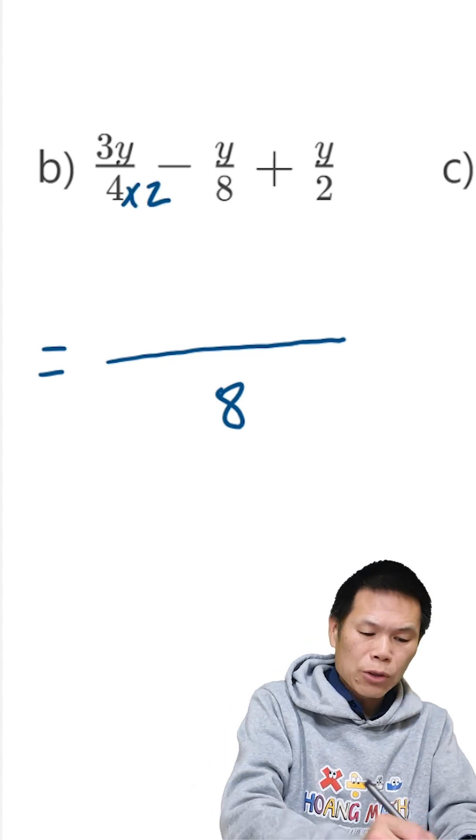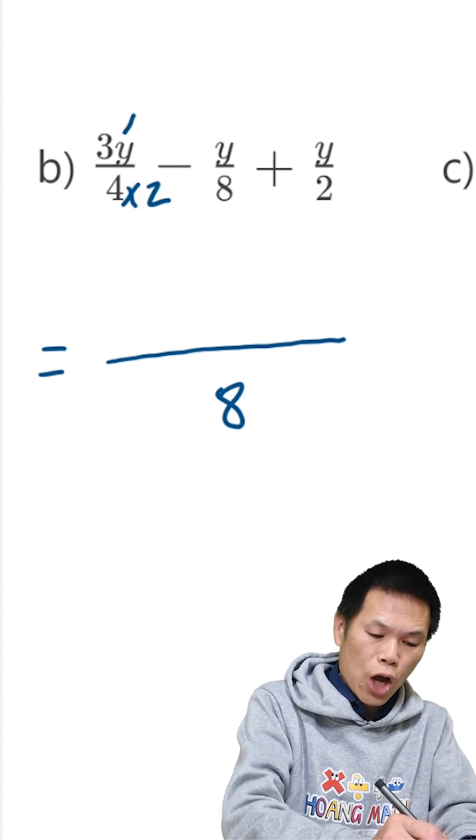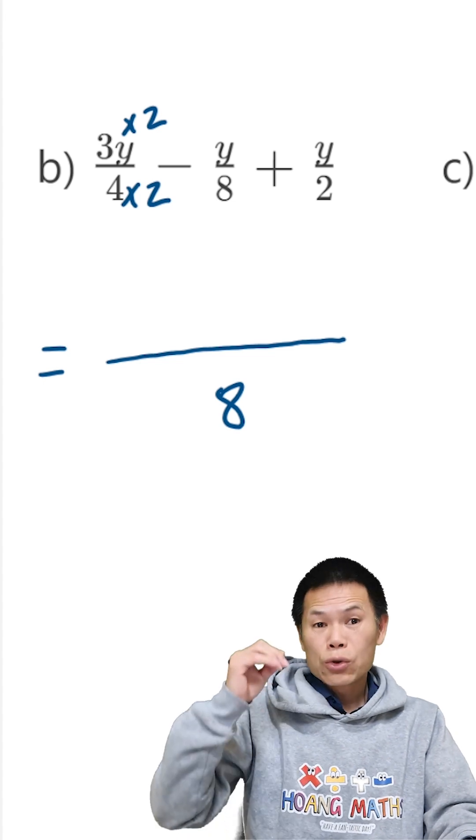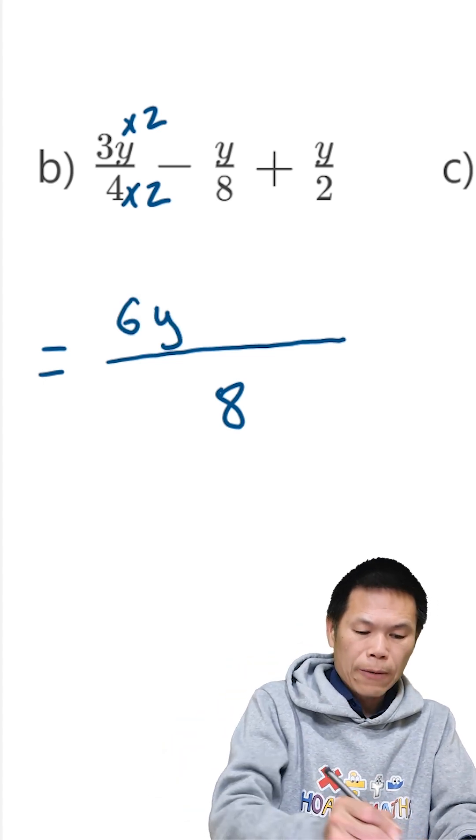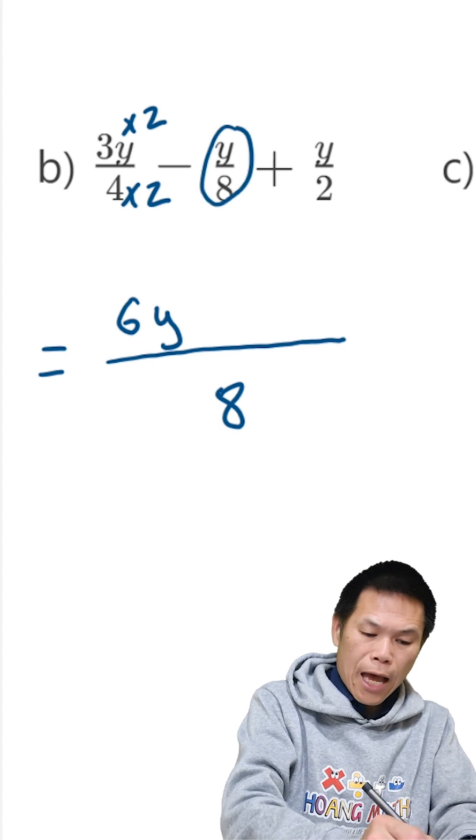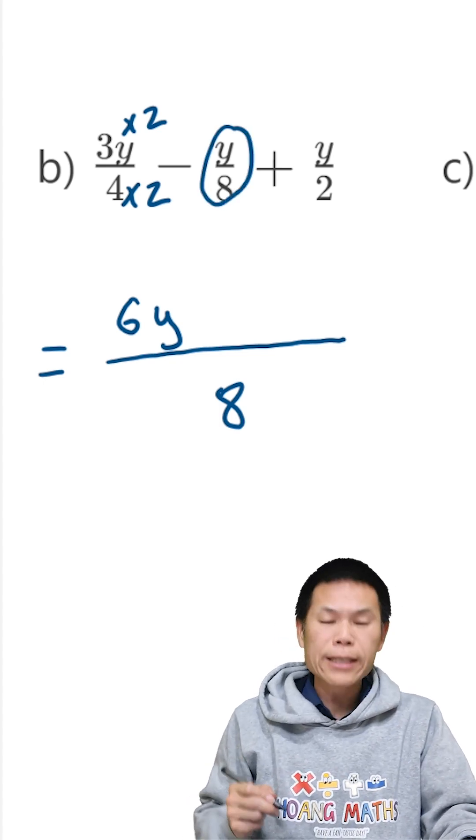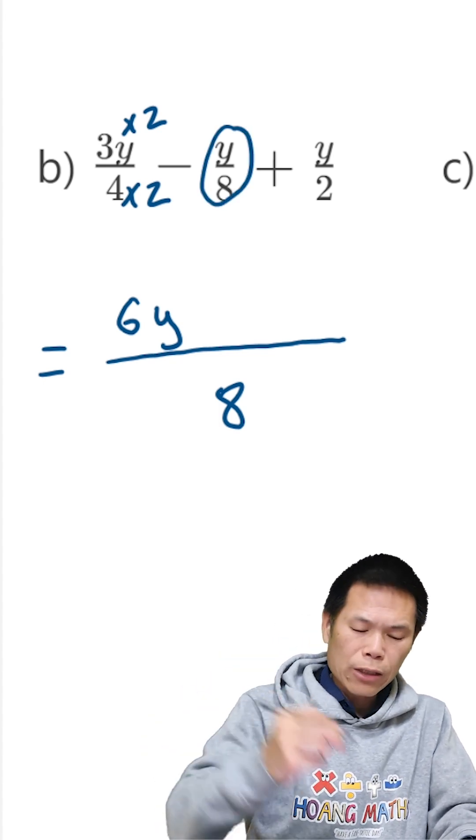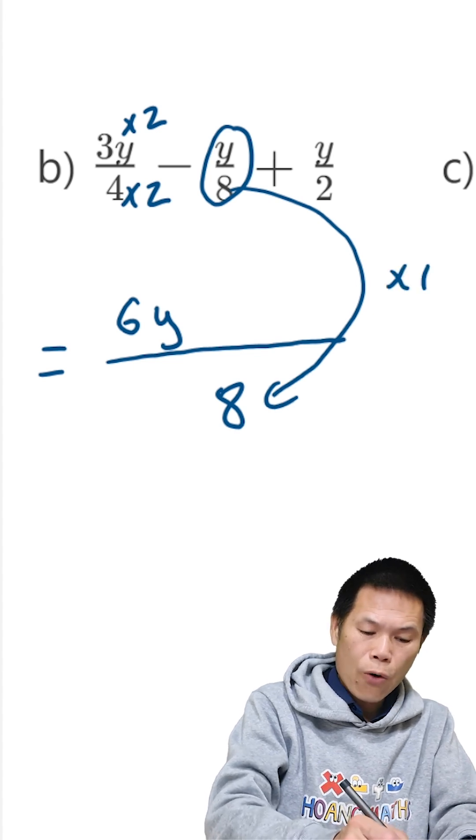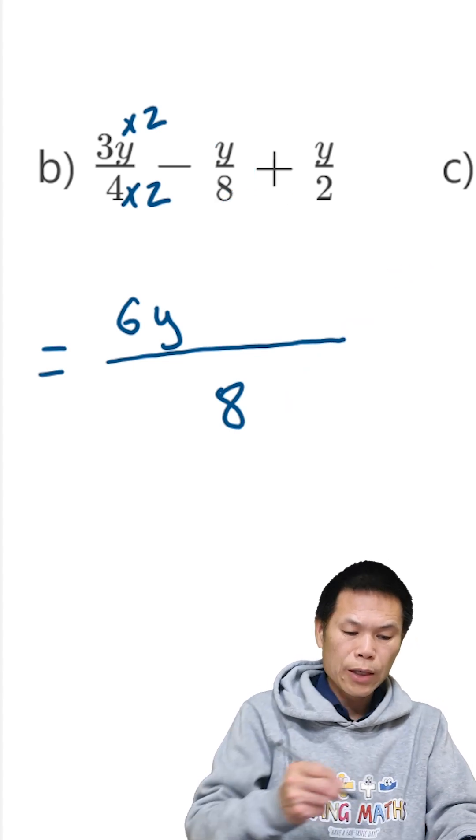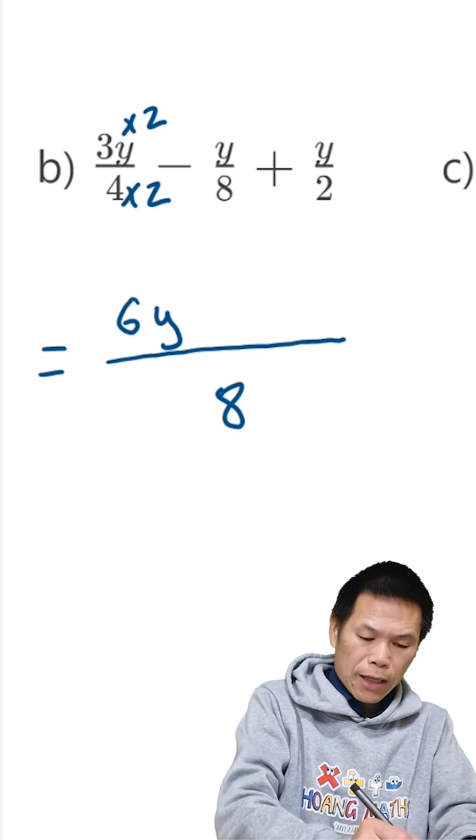Now from 4 to 8 we times 2, so therefore the top we times 2 as well. 3 times 2 is 6, so the answer is 6y. And then this y over 8, so to get 8 to 8, this one here which is times by 1, so therefore y times 1 is y, so we minus y here.